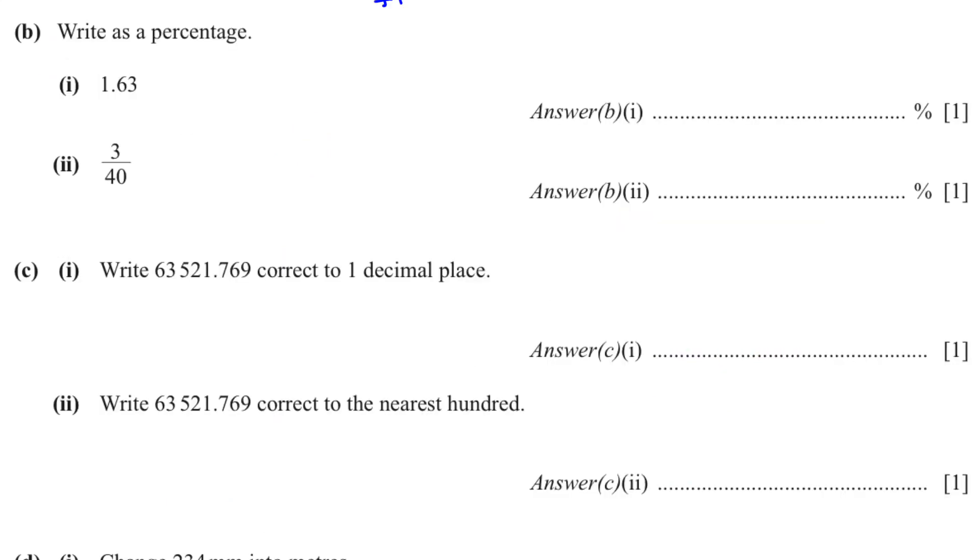The next question. Write as a percentage. Whenever you have to write as a percentage, you have to multiply by 100. So 1.63 multiplied by 100 will give us 163%. 3 over 40 multiplied by 100 will give us 7.5%. In C1, they want us to write this correct to 1 decimal place. If the number after the place we want to round to is 5 or more, we add 1. So the answer is 63521.8.